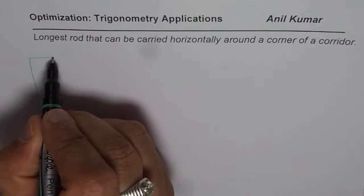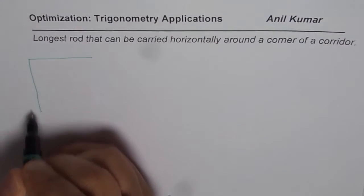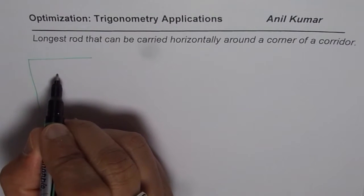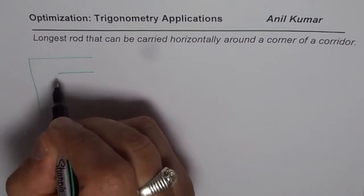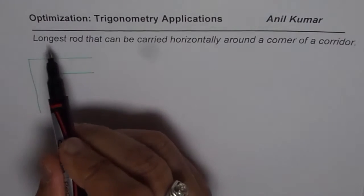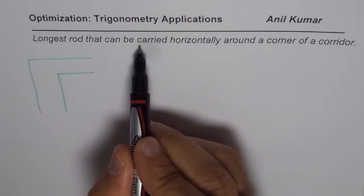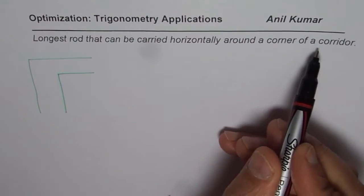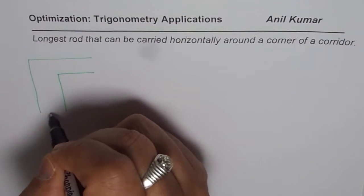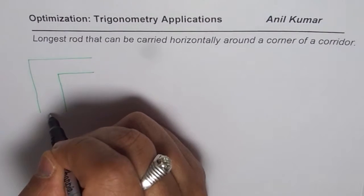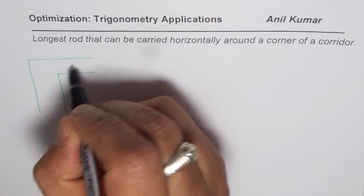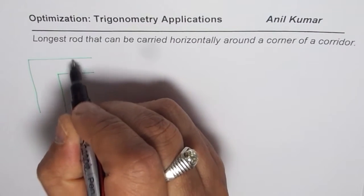Let me show you a diagram which represents the situation. This is the corner of a corridor, and in a general case we will take different widths of this corridor. Let us say this width is smaller than the other one. The question here is we need to find the largest rod that can be carried horizontally around a corner of the corridor — from here to there — and when you have a turn it makes an angle.